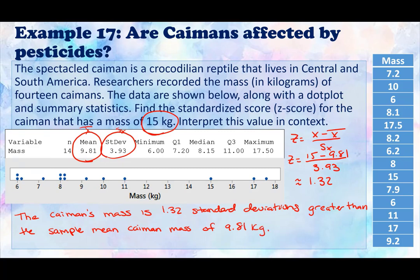Okay. So notice here that the z-score doesn't have a unit. We didn't put kilograms after this because, again, this is 1.32 standard deviations, not kilograms.